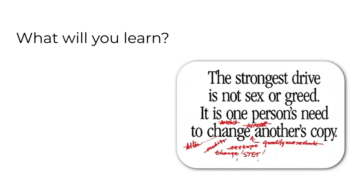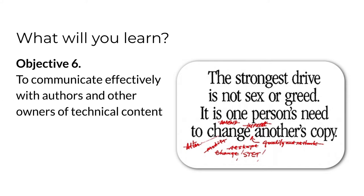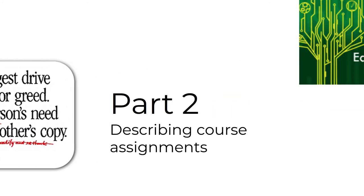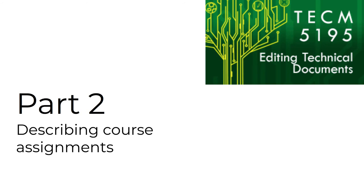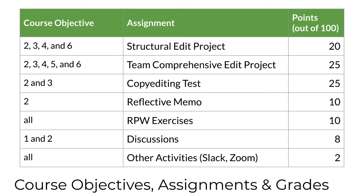The sixth and final objective is for you to practice communicating with the owners of technical content. The editor-author relationship can be problematic, so you'll learn some techniques for better managing that relationship. Now let's talk about the course assignments in just a little detail. The table lists the major assignments you'll complete in the course along with the learning objectives they support and the way in which each contributes to your course grade.